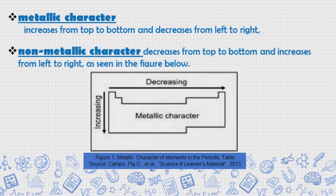With respect to the position in the periodic table of the representative elements, the metallic character increases from top to bottom and decreases from left to right, while the non-metallic character decreases from top to bottom and increases from left to right.